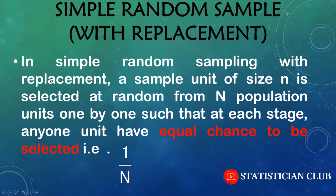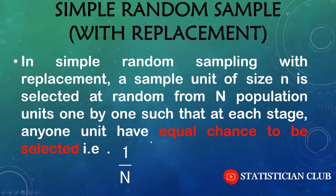In simple random sampling with replacement, a sample of size n is selected from a population of capital N units. We denote units of the population by capital N and units of the sample by small n. We select sample units one by one such that at each stage any unit has equal chances to be selected. For example, if the population is 100, then capital N equals 100 and the probability of selection of each unit is 1 over 100.